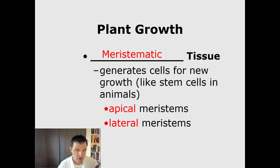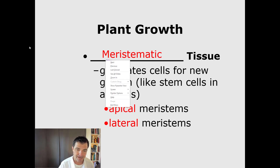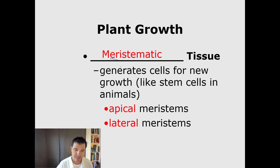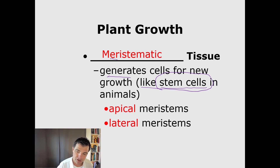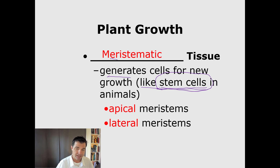When plants grow, they use specialized tissue designed for growth called meristematic tissue. Meristematic tissue is what generates new cells. I like to equate these to stem cells — most people are more familiar with animal cells, and stem cells are often in the news as elementary cells that can develop into other kinds of cells. There's a lot of research on that because of the potential to cure diseases. In plants, the equivalent is meristematic tissue.